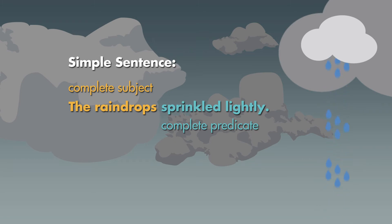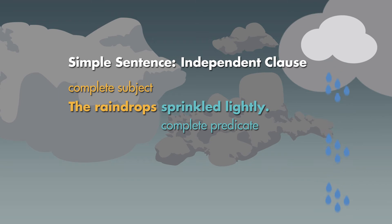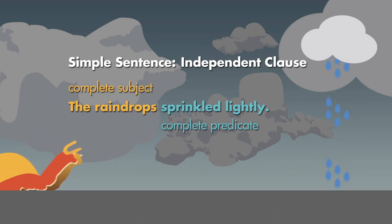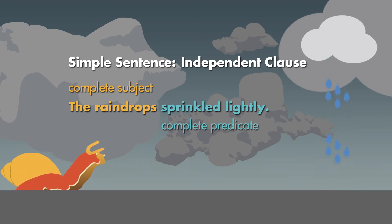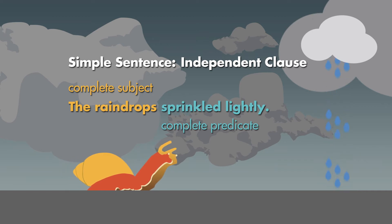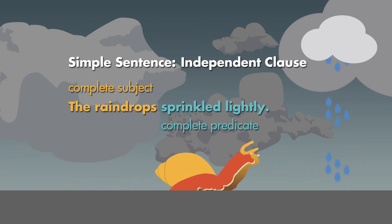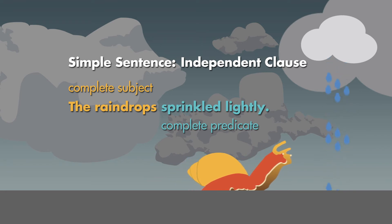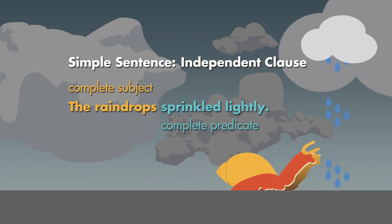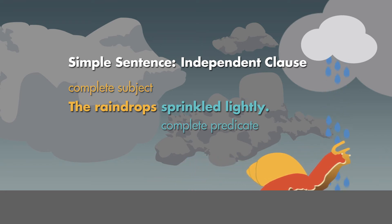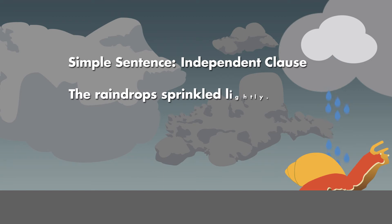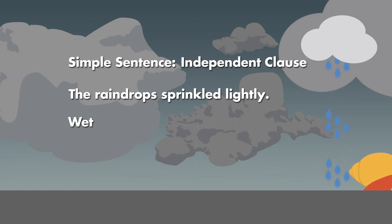A simple sentence can stand alone. It is an independent clause. Think of the word independent as meaning by itself. This will help you remember: an independent clause can stand by itself. Read these independent clauses: The raindrops sprinkled lightly. Wet snails crawled nearby.